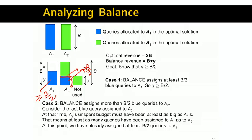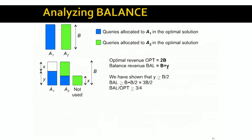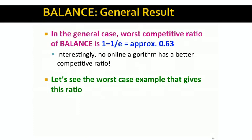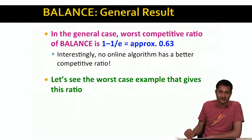Since we've shown that Y is greater than or equal to B/2, and the balance revenue is B plus Y, we know the balance revenue is greater than or equal to 3B/2. Therefore, the ratio of the balance revenue to the optimal revenue is at least three fourths. We've analyzed the simple case of balance with exactly two advertisers and shown that the competitive ratio is three fourths.